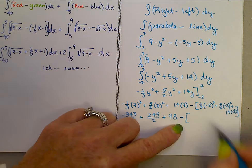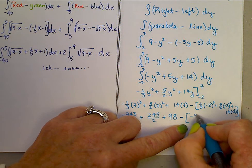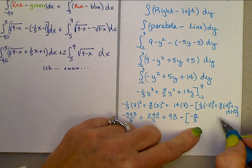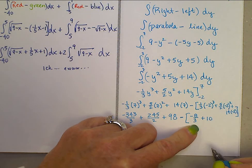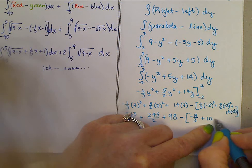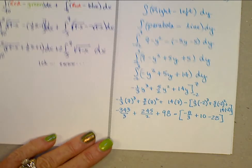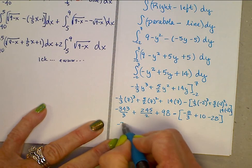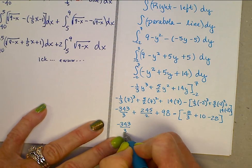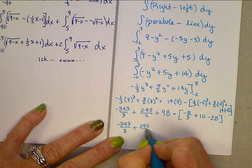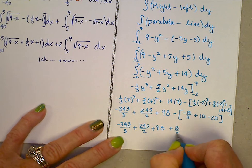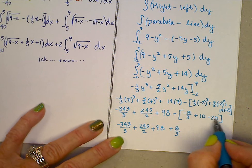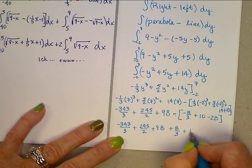Minus, okay in here, negative 2 cubed, that's going to be negative 8 and then times negative one-third, that's 4 times five-halves is 20 over 2, that's 10. And 14 times negative 2, minus 28. So negative 343 over 3 plus 245 over 2 plus 98 plus 8 thirds. And then there's minus 10 minus minus 28, plus 18.